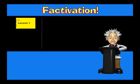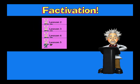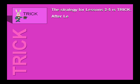Now let's look at the trick group. This group includes lessons two, three, four, and five. The strategy for lessons two through five is trick. After lessons two through five, you'll know all of these facts.